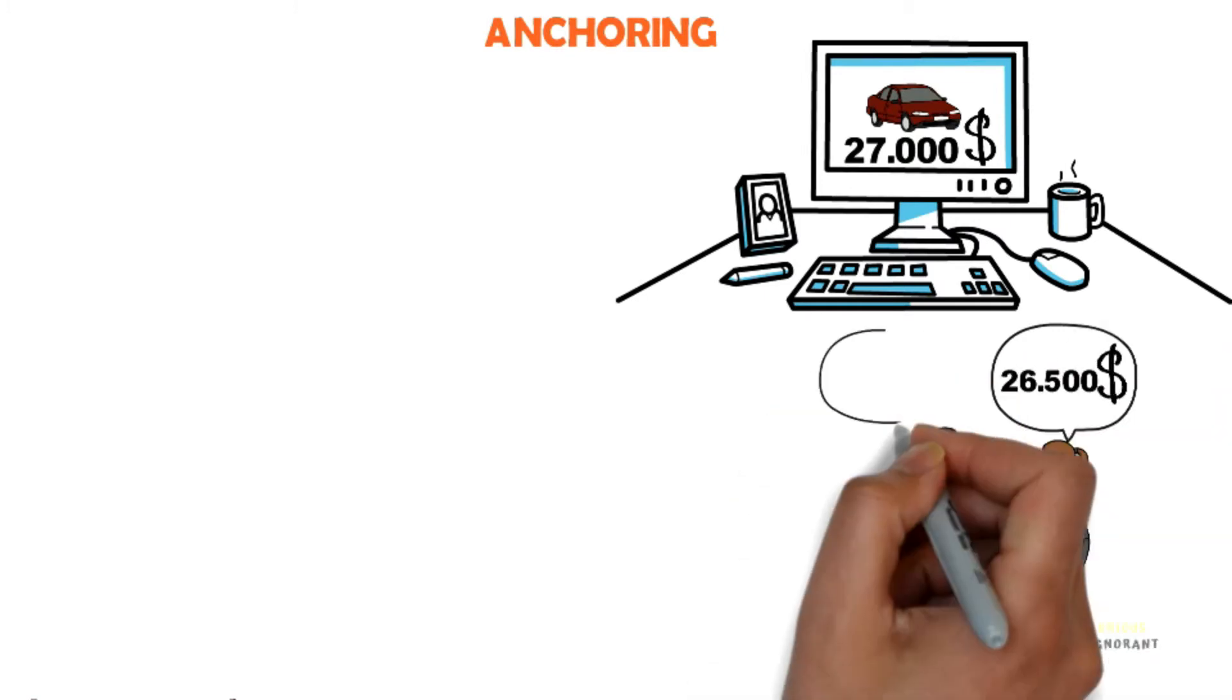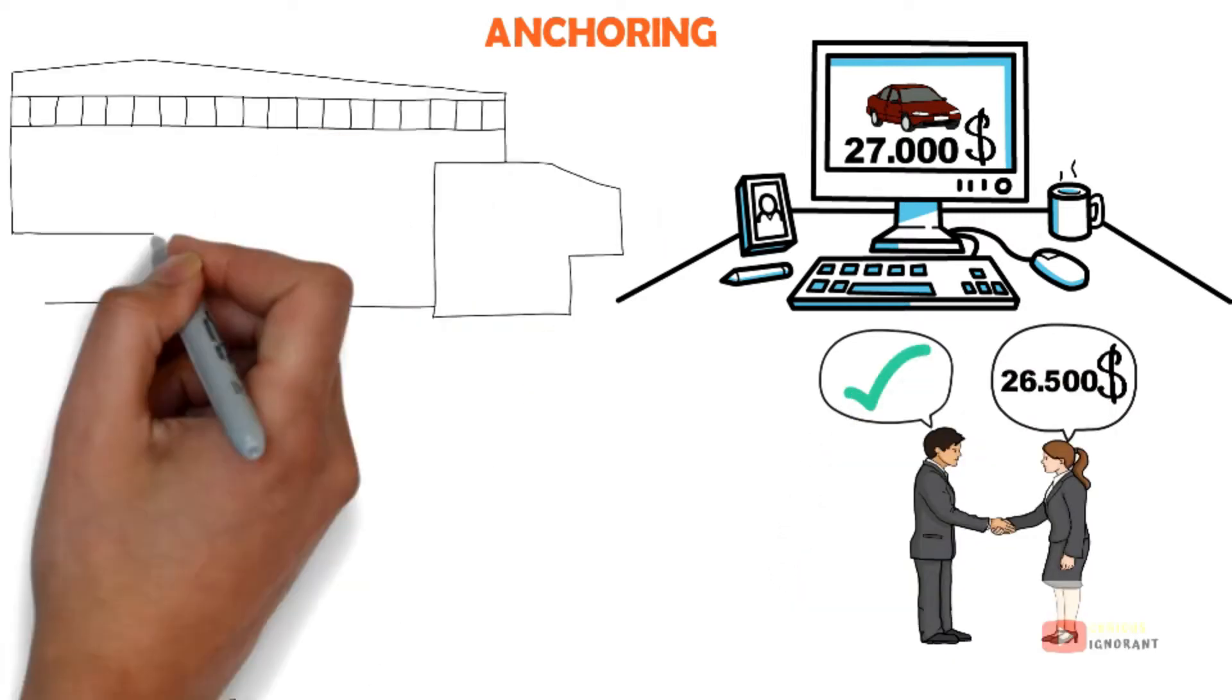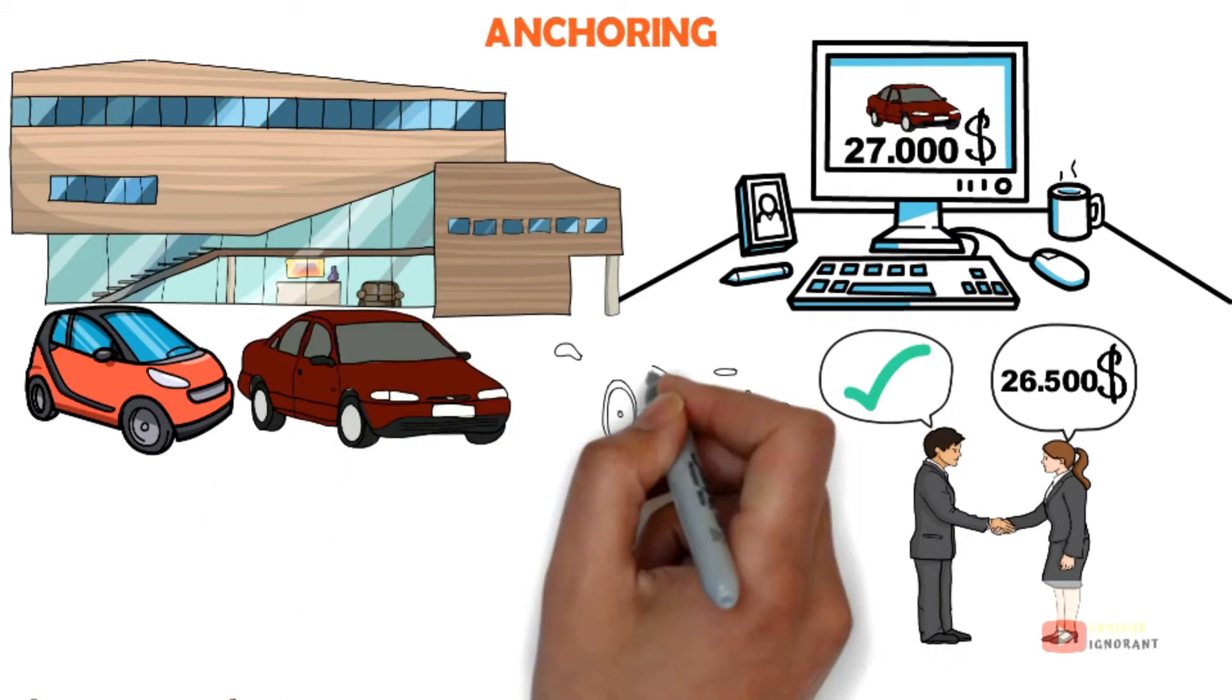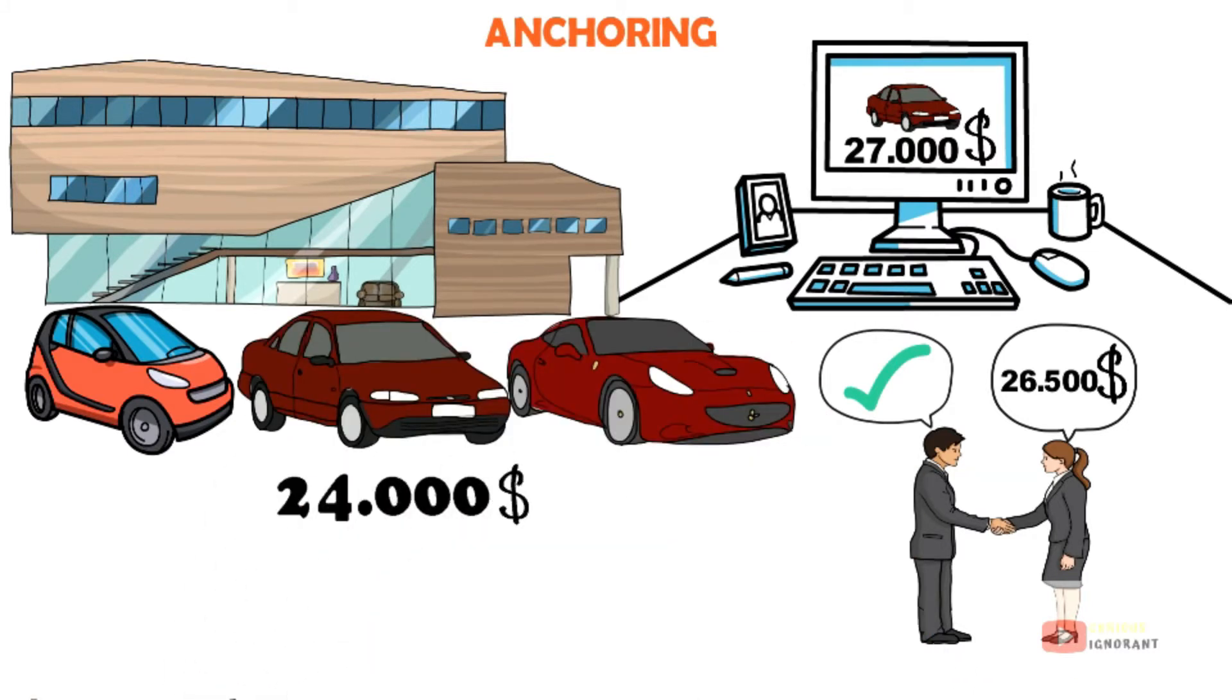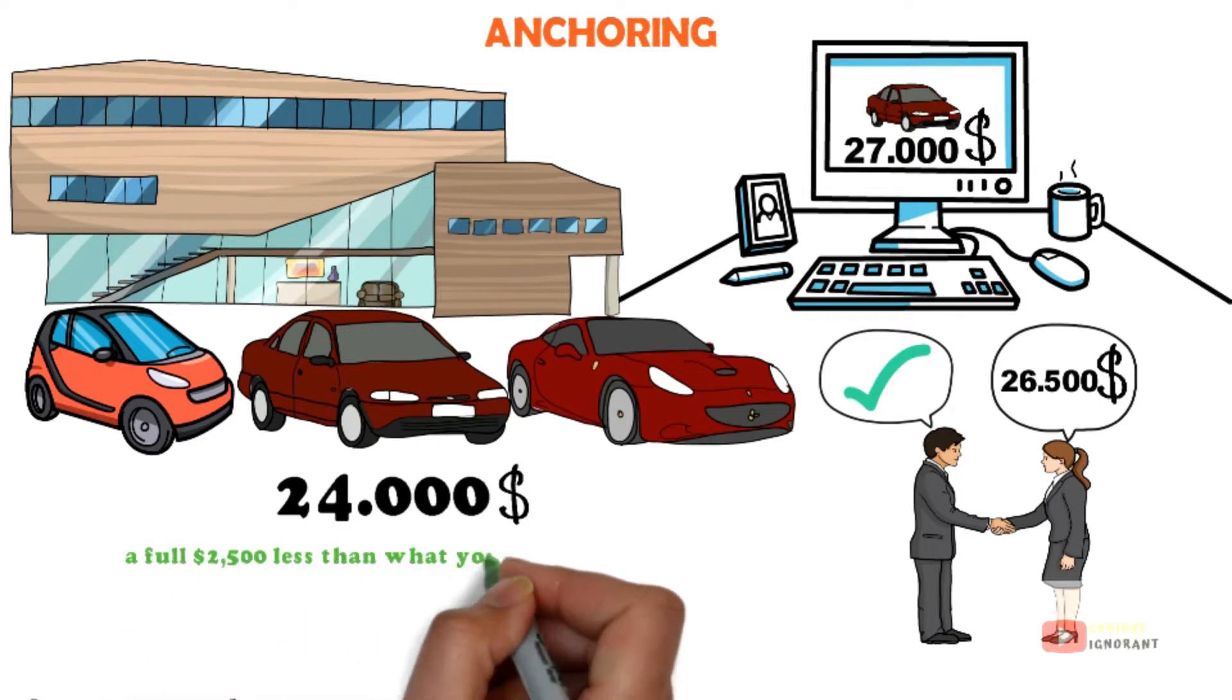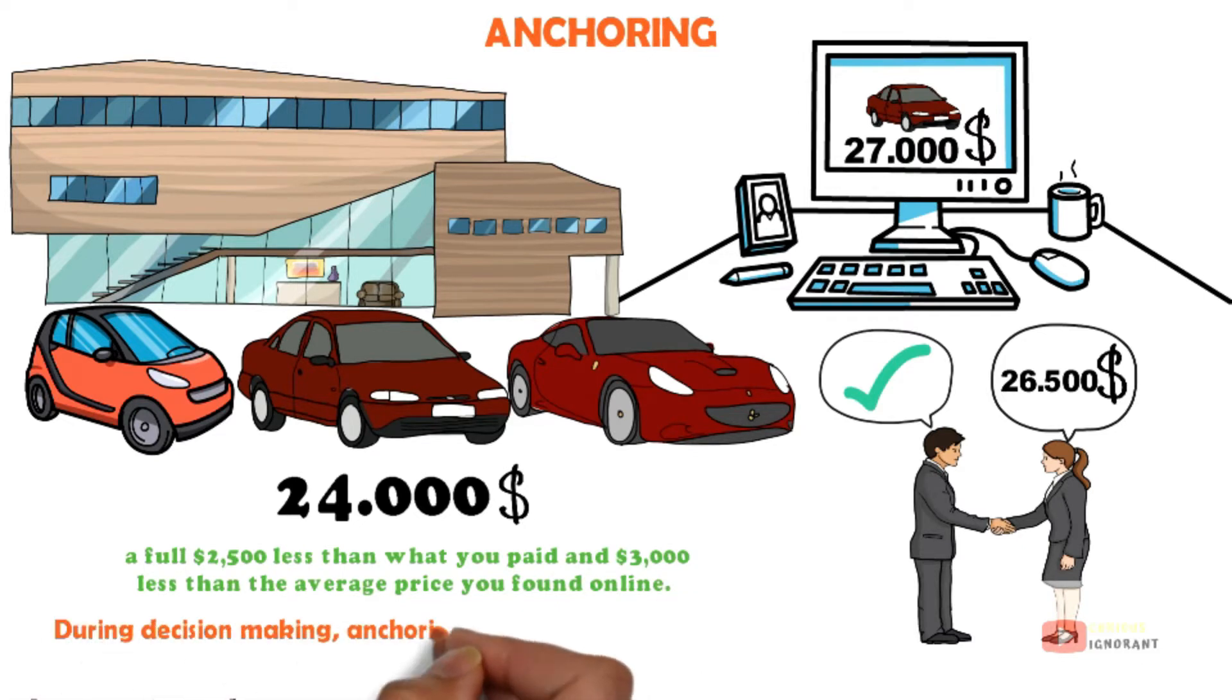After all, it's $500 less than what you were expecting to pay. Except, the car dealer across town is offering the same vehicle for just $24,000, a full $2,500 less than what you paid, and $3,000 less than the average price you found online. During decision making, anchoring occurs when individuals use an initial piece of information to make subsequent judgments.